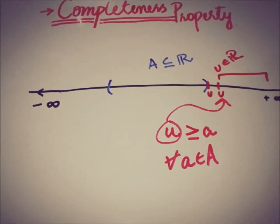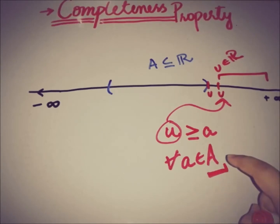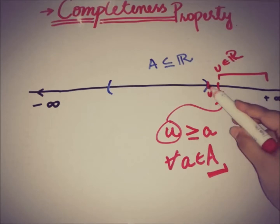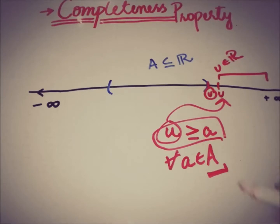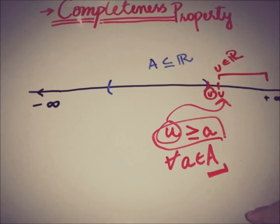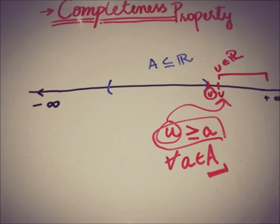Each such number u is called an upper bound of the set A. The set A is said to be bounded above if there exists a u with this property — that u is greater than or equal to every element of the set A. Such a u is said to be the upper bound of the set A.